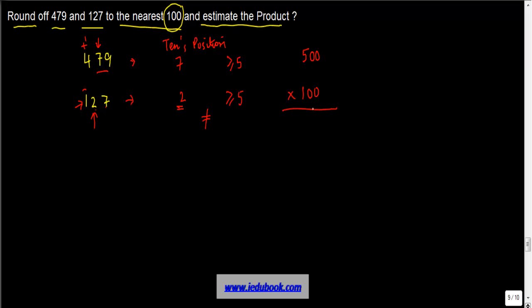So that is easy: 1, 2, 3, 4—there are four zeros. 5 into 1 gives you 5, so the product is 50,000. Now you must be wondering what is the practical application of these two.